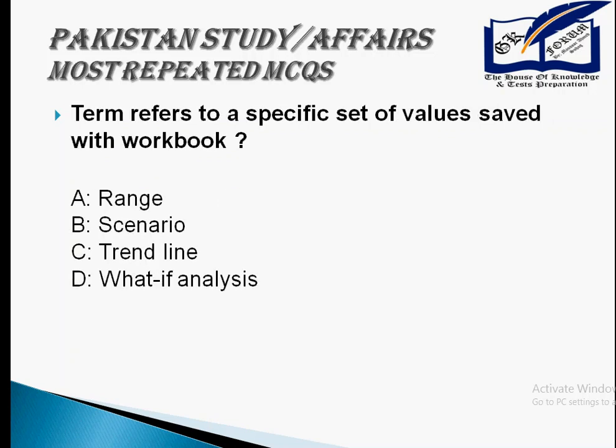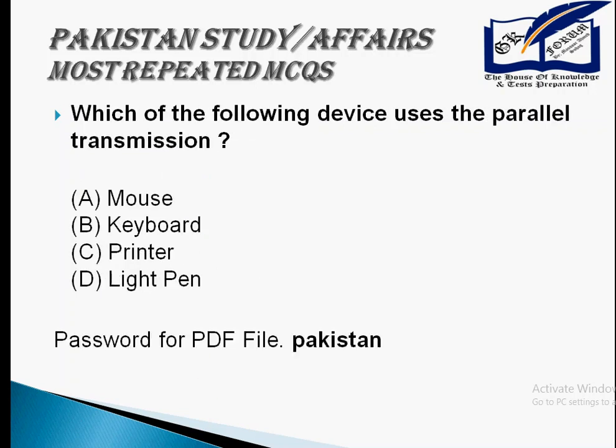The term that refers to a space with data values saved with a workbook is called a scenario. Which of the following devices uses parallel transmission? It's a printer. The password for the PDF file is 'Pakistan' — you have a link in the description of the video to access the PDF file.